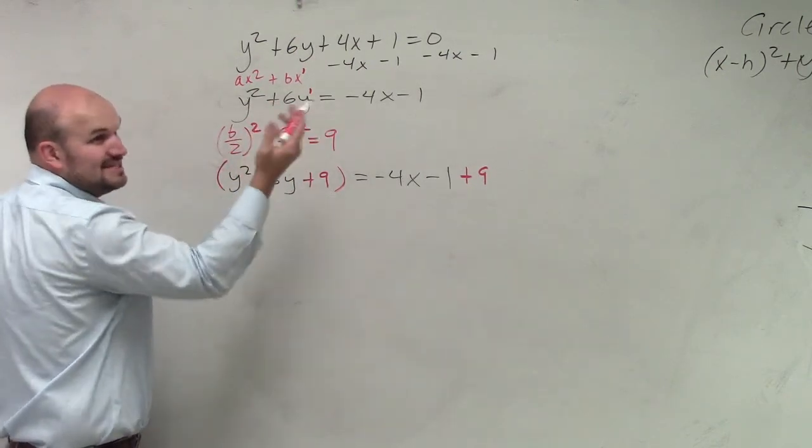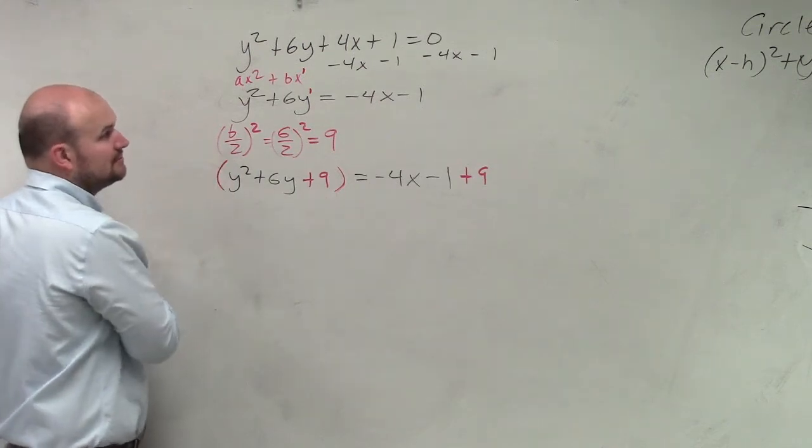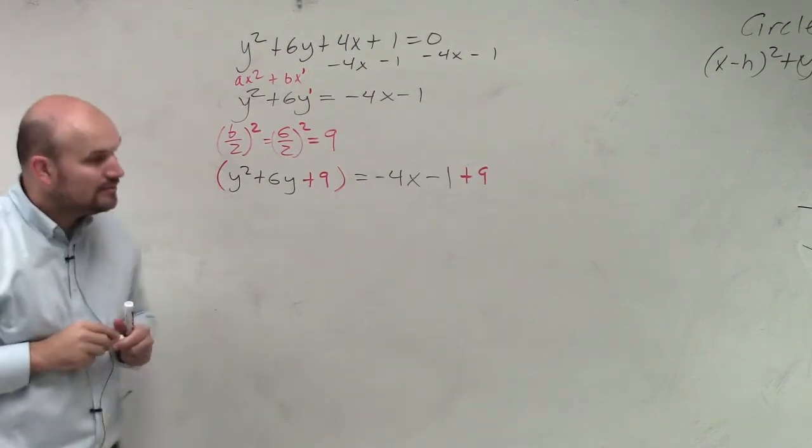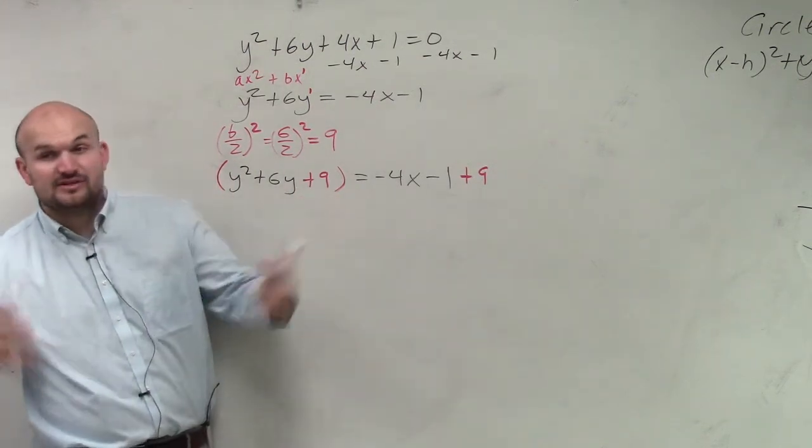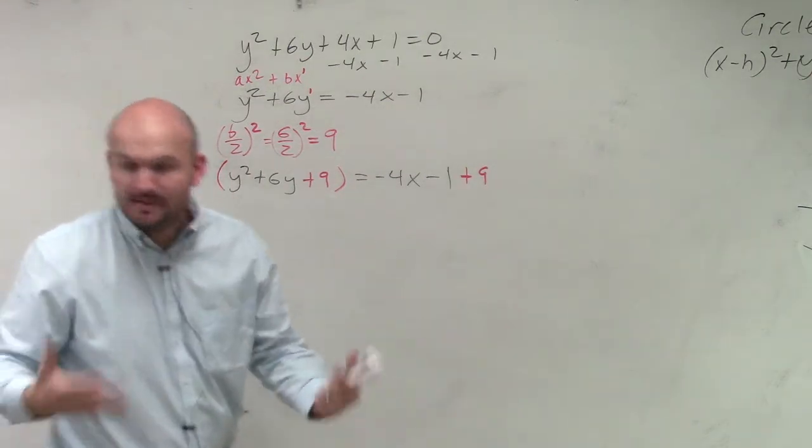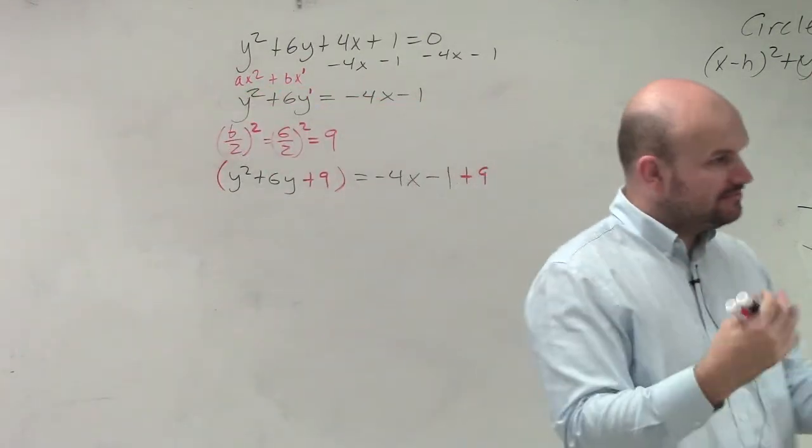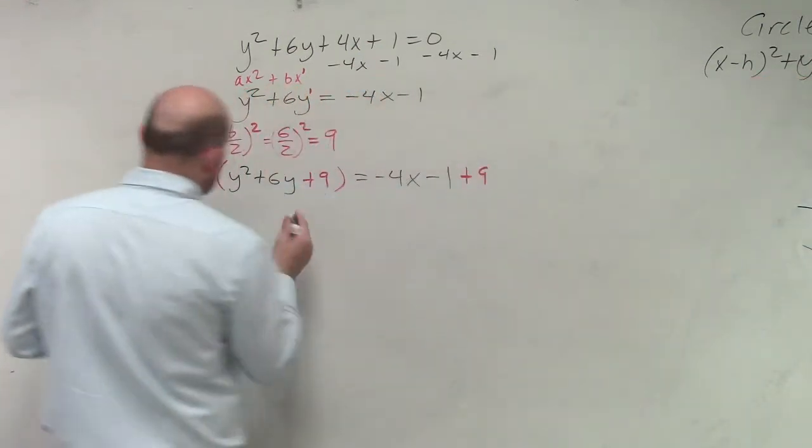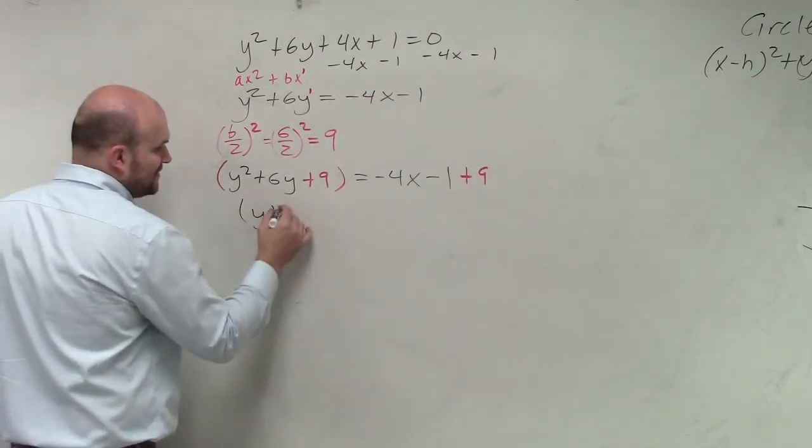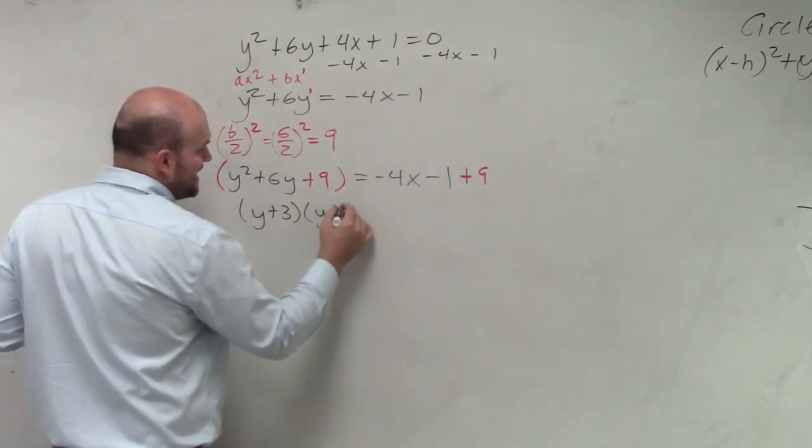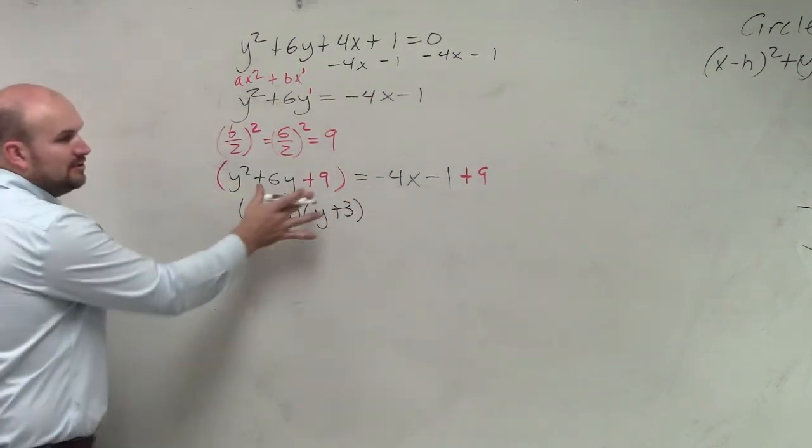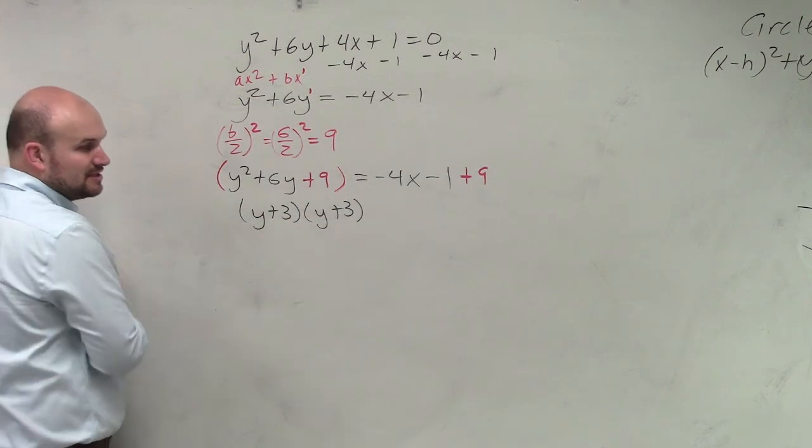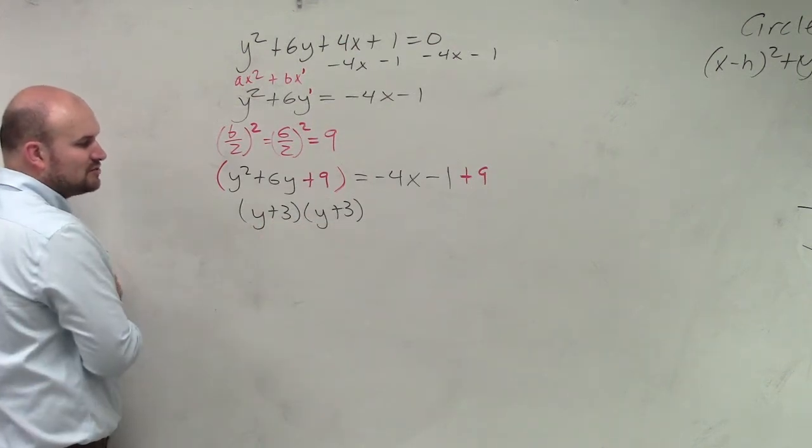Because we could have z's here, or w's, or whatever you want to. Now, what we have done is we have created a perfect square trinomial. That's completing the square, creating a perfect square trinomial. So now, we can just factor this down. I will show this to you one more time, but I really get sick of doing this. So I'm not going to factor them down every single time for you.